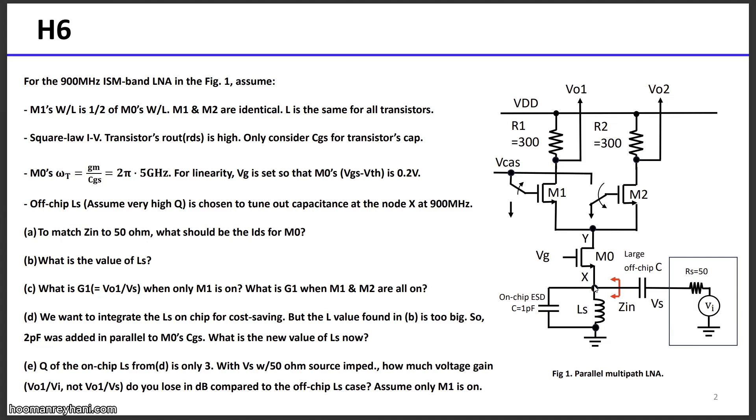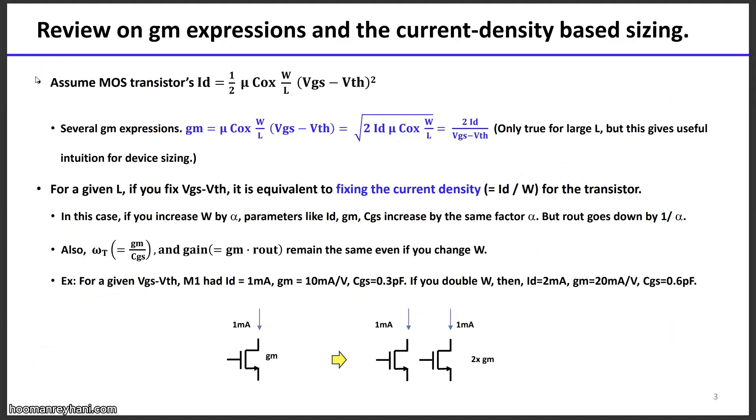Since the inductor here is used to tune out any capacitance that is connected to X, you are left with one over GM looking into the source of M0. In the second page, I'm showing you some review material on GM expressions and the current density-based sizing, assuming that the transistor have this square root device relationship. We know from the basic analog IC class that the GM can be expressed in three different ways. This is simply a review material. You can just refresh your memory.